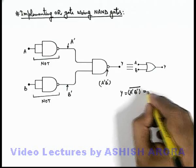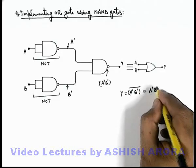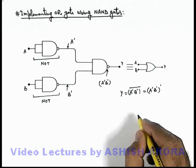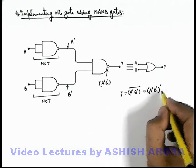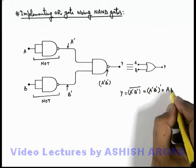Which can be written as A bar B bar whole prime. So in this situation, this signal which is A prime B prime whole prime when we analyze this expression by using Boolean algebra, then it can be further simplified as A plus B.